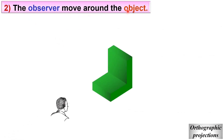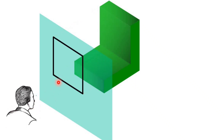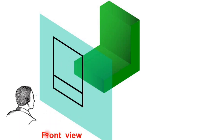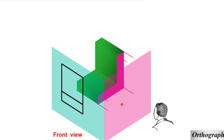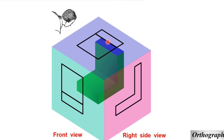The second approach: the observer moves around the object. To get the front view, we project on this plane and you get these two rectangles. For the right hand side view, the observer moves to the right side and projects on this plane to get that view. Similarly, if you want to see the top view, the observer moves to the top and you get the projection on that plane. In this case the observer moves according to the view required.